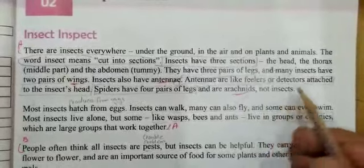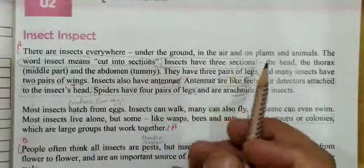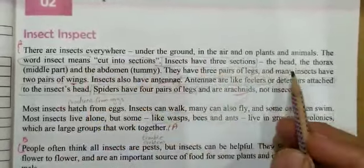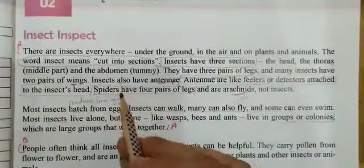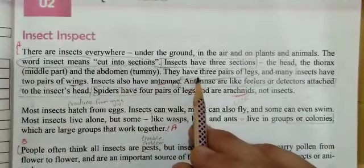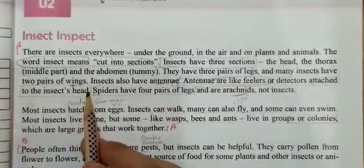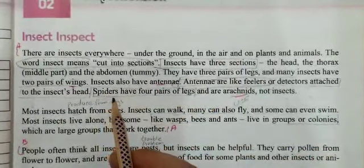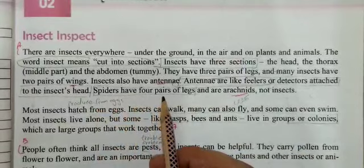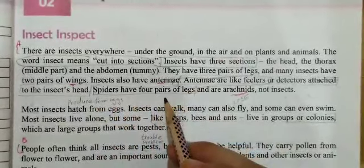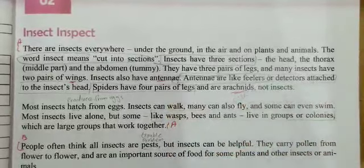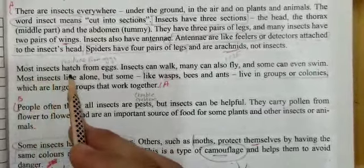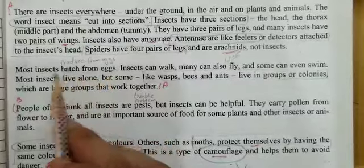In the first paragraph, we learned about the meaning of 'insect' — it means cutting into sections: three sections — the head, the thorax, and the abdomen. We also learned that insects have three pairs of legs and two pairs of wings, and they have antennae. At the end of the paragraph, we learned that spiders have four pairs of legs, so spiders are not insects — spiders are arachnids.